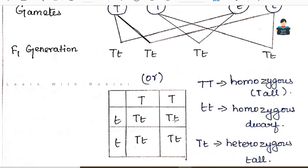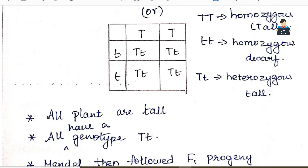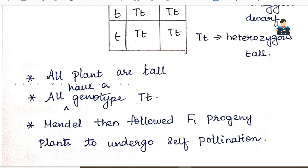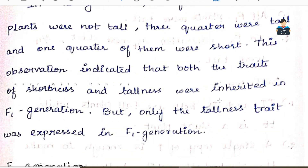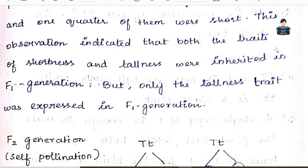In the F1 generation, all plants are tall. You can represent this in a picture or in a table. The F1 tall plants then undergo self-pollination.